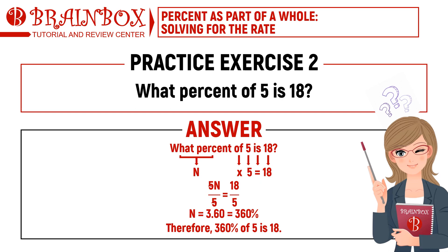Time is up. The correct answer is 360%. The mathematical equation is N times 5 equals 18. We transpose 5 to the other side, giving N equals 18 divided by 5. Solving this, we get 3.60. Converting to percent form, that is 360%. So 360% of 5 is 18.